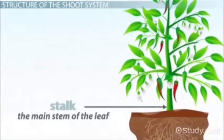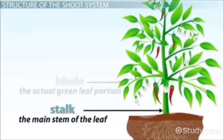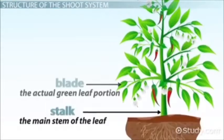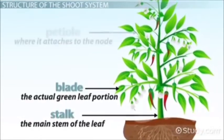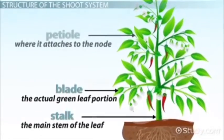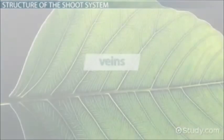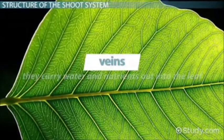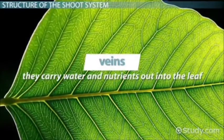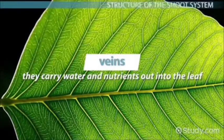The stalk is the main stem of the leaf, the blade is the actual green leaf portion, and the petiole is where it attaches to the node. The veins are similar to our veins in that they carry water and nutrients out into the leaf.